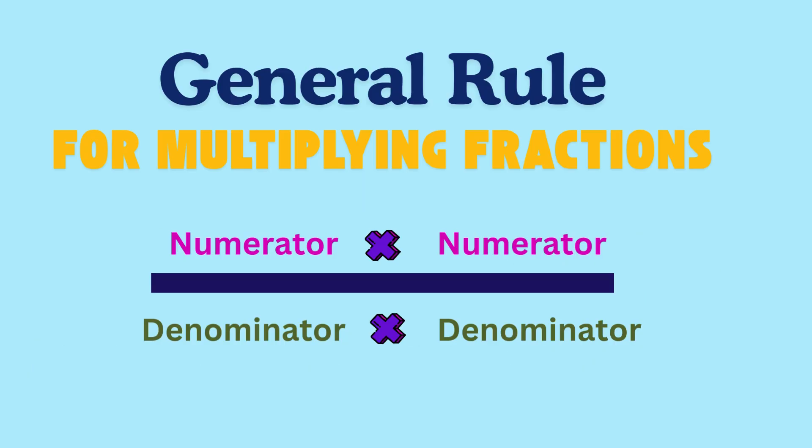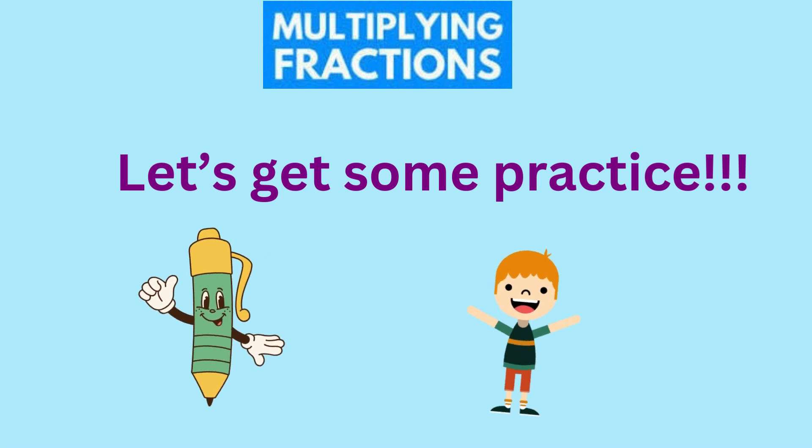So, the general rule for multiplying fractions is numerator times numerator over denominator times denominator. Now, let's do a few examples together.